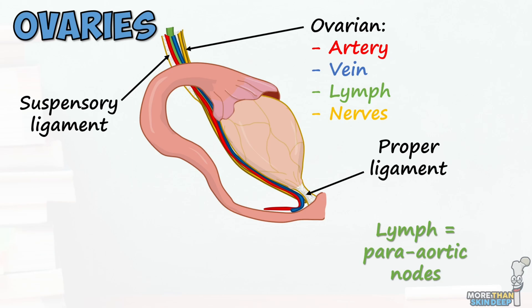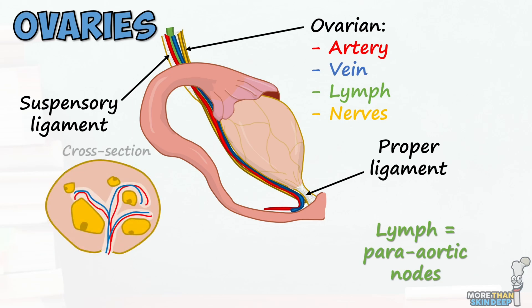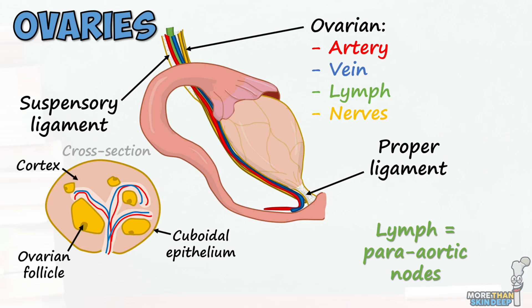The proper ovarian ligament is less complex and simply connects the ovary to the fundus of the uterus to hold it in place. If we cut an ovary in half, we can see its internal structure is divided into a surface formed of cuboidal epithelium and connective tissue, a cortex which contains the ovarian follicles composed of the egg and its surrounding follicular cells, and a medulla, which is where the blood vessels and nerves travel.